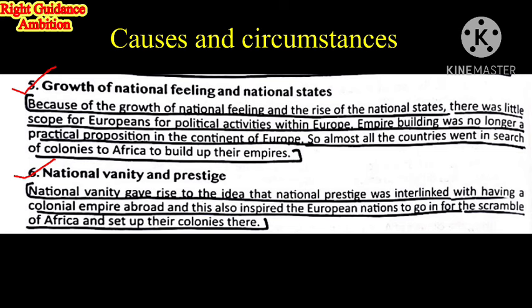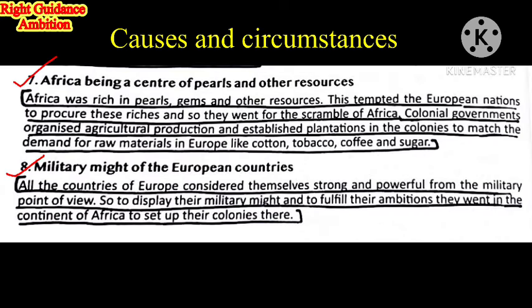Sixth point: National Vanity and Prestige. National vanity gave rise to the idea that national prestige was interlinked with having a colonial empire abroad. This inspired European nations to go for the scramble of Africa. The concept was: as much as you are strong, as many colonies you have, as much respect and prestige you gain. Britain, France, Spain, and Portugal started creating colonies, and their mindset was that the more colonies on the African and Asian continent, the more respect and prestige would increase.